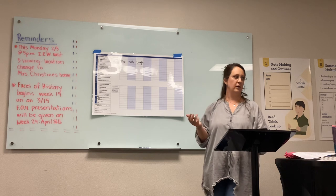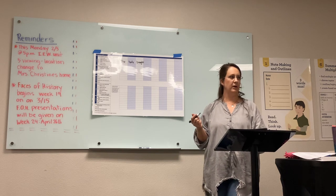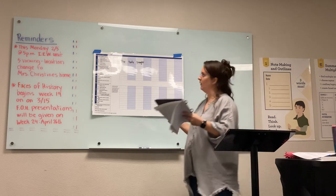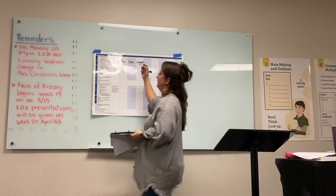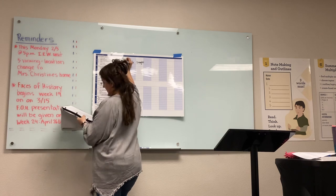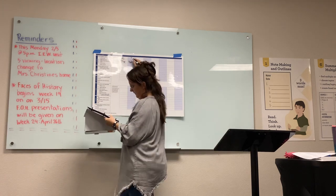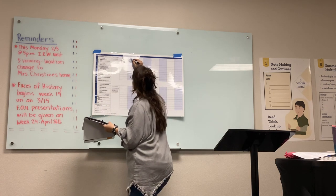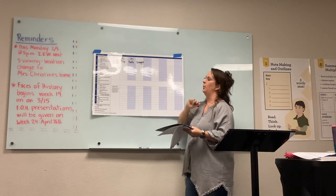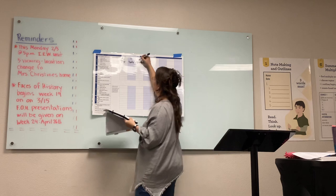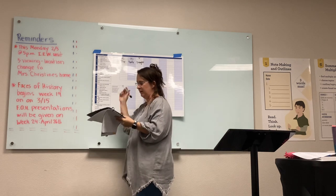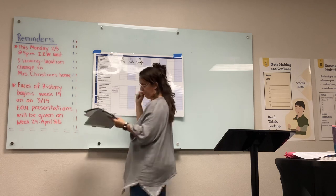Now we're going to label it — this is parsing, right? We're going to identify the parts of speech. We're going to break it apart and analyze it. So 'the' — what is 'the'? Particle adjective. What is 'turtle'? Subject. And what is 'brought'? Verb. And we don't have the full context, but this is transitive.